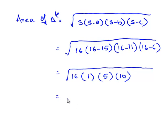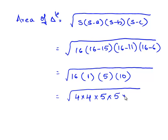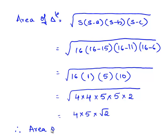We have square root of 16 times 1 times 5 times 10. We can write this as square root of 4 squared times 5 squared times 2. Bringing out 4 times 5 from the square root, we are left with square root of 2. Therefore, the area of the triangle is equal to 20 root 2 square meters.